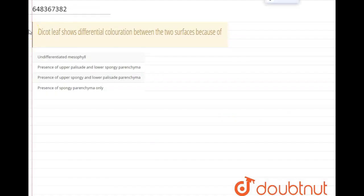Hi everyone, let us read the question. A dicot leaf shows differential coloration between the two surfaces because of... the given options are undifferentiated mesophyll, presence of upper palisade and lower spongy parenchyma, presence of upper spongy and lower palisade parenchyma, presence of spongy parenchyma only.